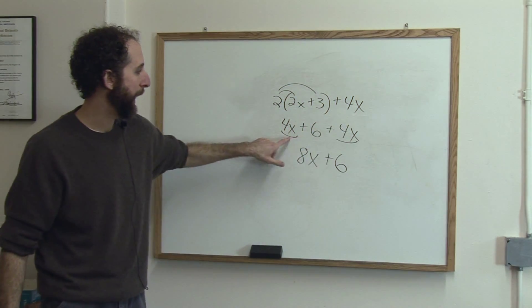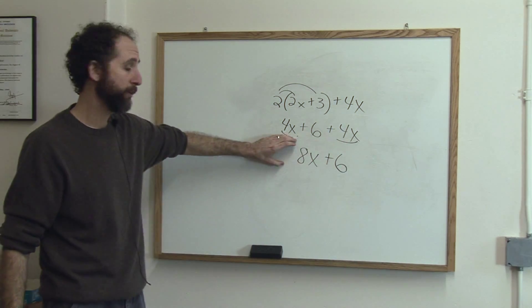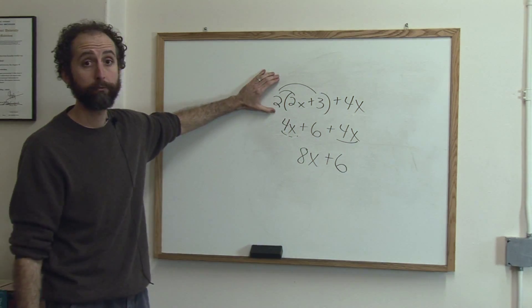First I distribute, then I add like terms. So that's the simplified expression. You can see it is a lot simpler, in fact, than the original variable expression.